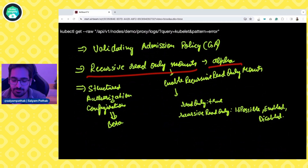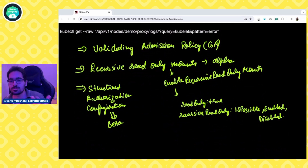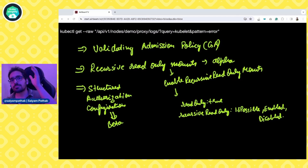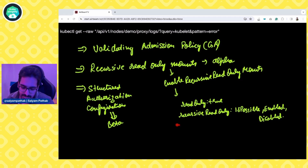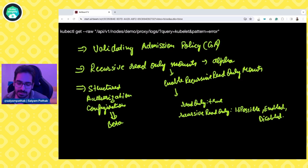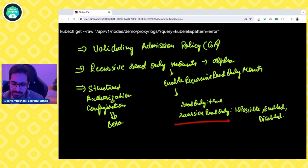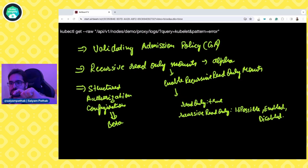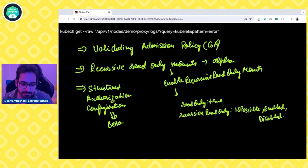Recursive read-only mounts are coming in alpha. It's very interesting because when you do a read-only mount in the YAML manifest, it's not always the case that all sub-directories in that particular directory will be read-only. So recursive read-only makes the sub-directories within a read-only directory also read-only. You need to enable the feature gate for that and add it in conjunction with the read-only flag — specifying read-only true and then recursive read-only, which has values: if possible, enabled, and disabled. Structured authorization configuration is also moving to beta.